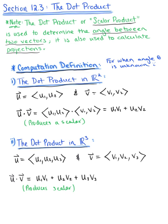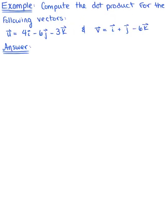So let's go ahead and look at an example. So here we are asked to compute the dot product of the following vectors. And we are given vector u, and I'm going to immediately rewrite this in their component form. So we have vector u is defined as 4, negative 6, minus 3. And we're also given vector v here, which is defined as 1, 1, negative 6. And we're asked to compute the dot product.